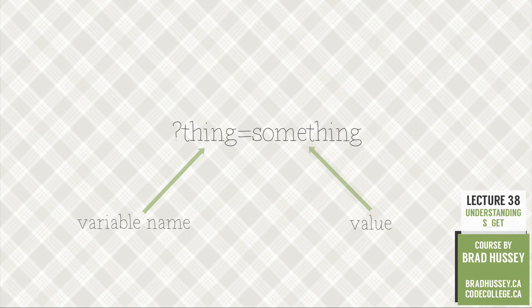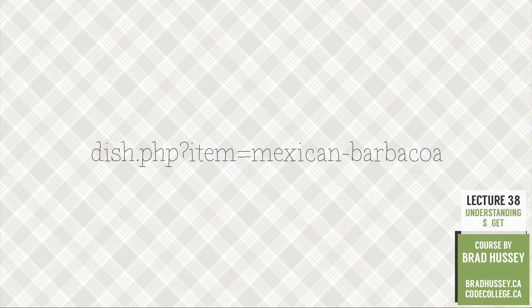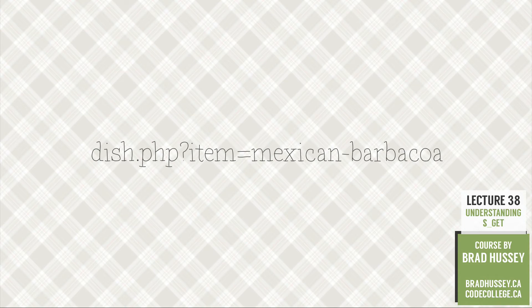So for example, in our previous lecture, we have a link on our menu.php page that navigates to dish.php?item=Mexican-barbacoa. The question mark, item, and then the equals sign — that is the query string.